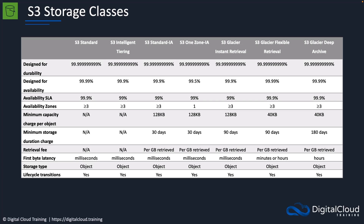However, for availability, it varies from 99.5% for S3 One Zone-IA up to four nines — 99.99% — which you get with multiple storage classes. One Zone-IA has the lowest availability, and that's because your data is stored in one availability zone. There are obviously different costs associated with each of these storage tiers.